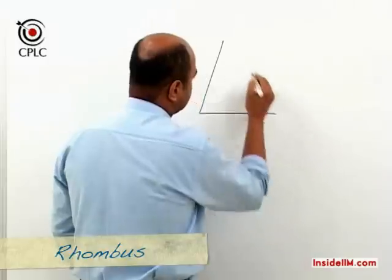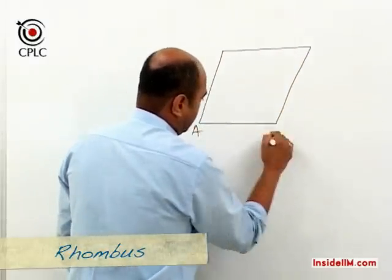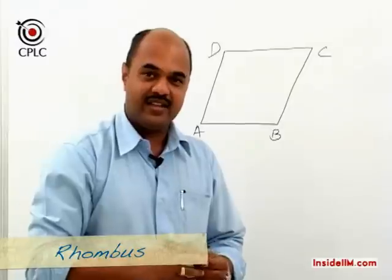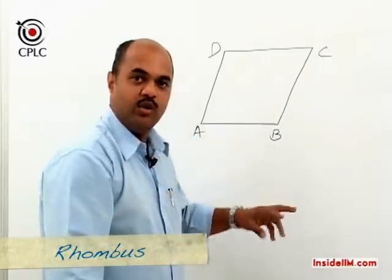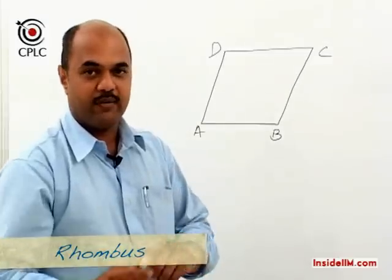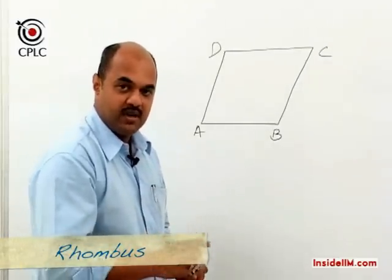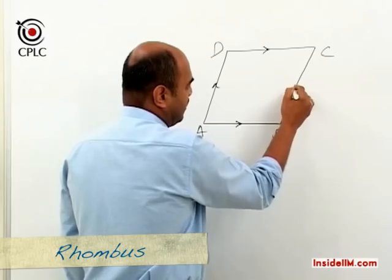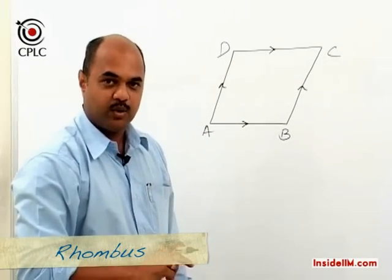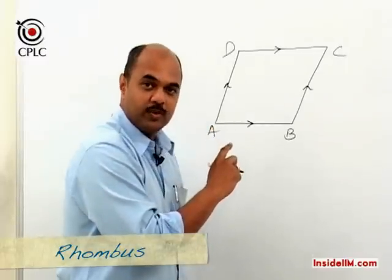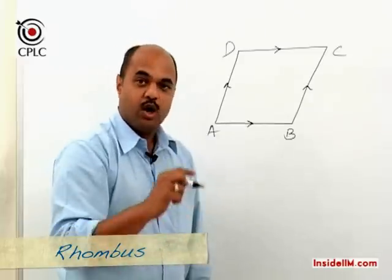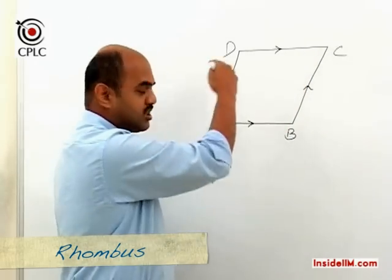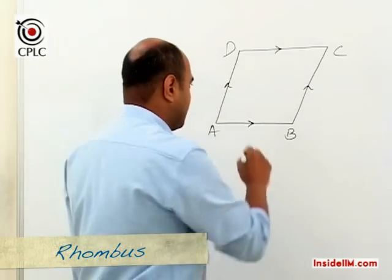If we draw the diagram for rhombus ABCD, the properties of a parallelogram are retained. Hence, a rhombus is always a parallelogram, but every parallelogram may not be a rhombus. A parallelogram becomes a rhombus when adjacent sides are equal. So opposite sides remain parallel, all sides in a rhombus are equal. With respect to angles, whatever was true for a parallelogram continues to be true: opposite angles are equal and adjacent angles are supplementary.